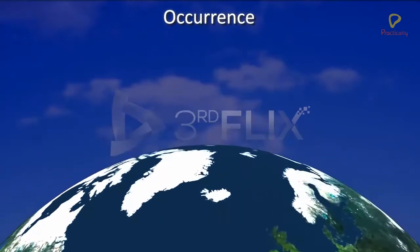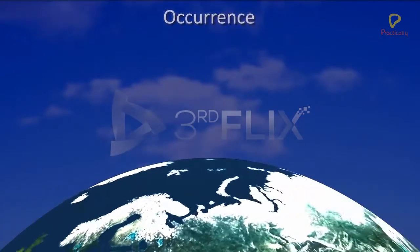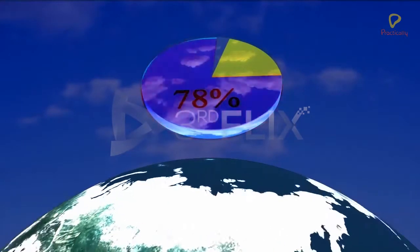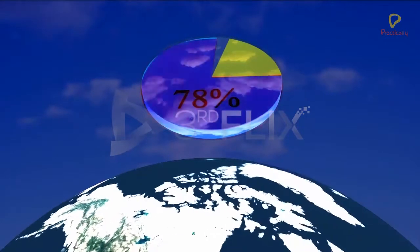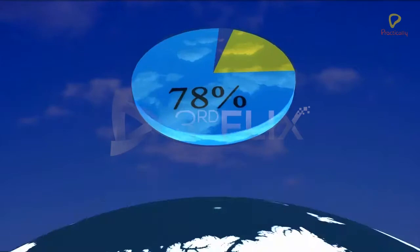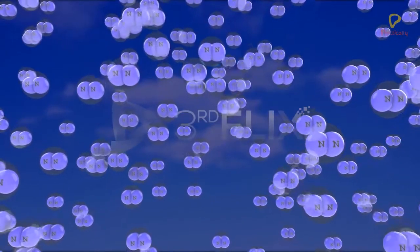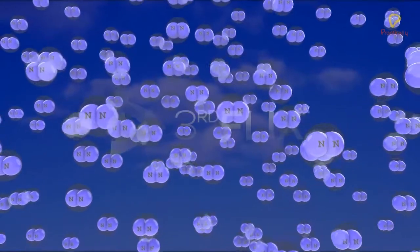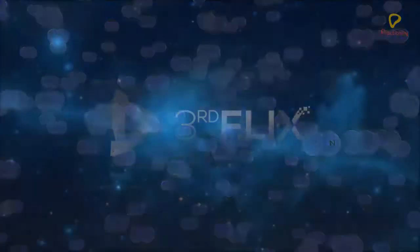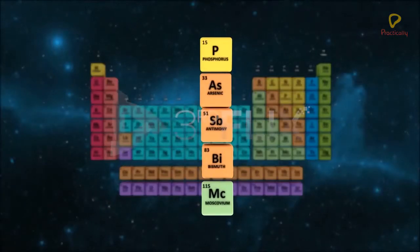Nitrogen is a major constituent of the Earth's atmosphere and accounts for 78% of it by volume. It is the first member of this group and occurs in free state as a diatomic gas. All other elements of this group exist in combined state.